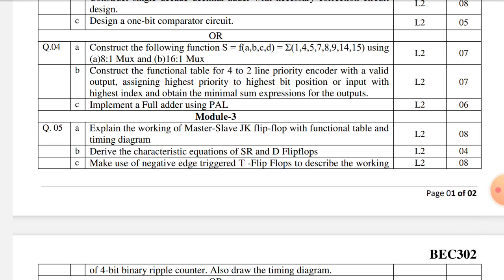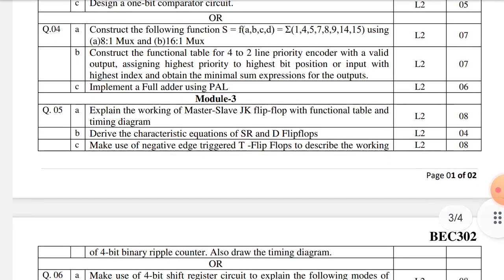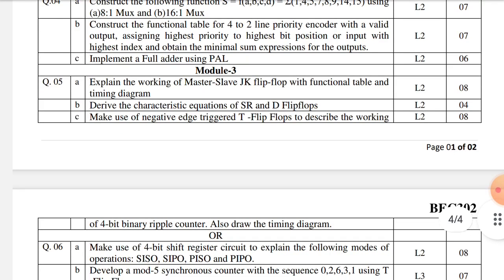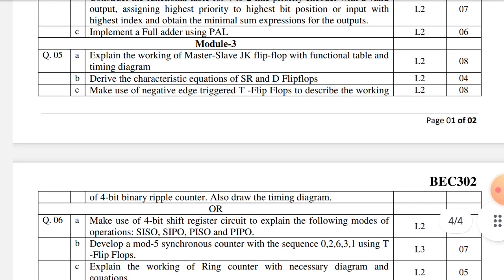They have given 4-to-2 priority line encoder, and implement the full adder using PAL. The third module again gives explain the working of JK flip-flop, the characteristic equations.